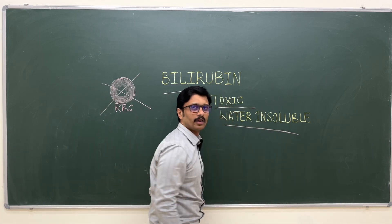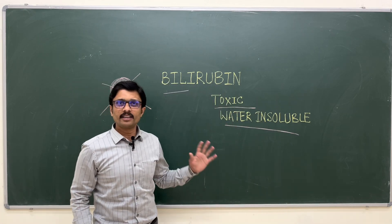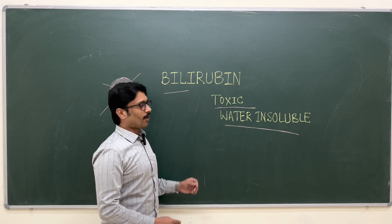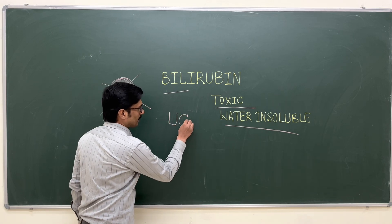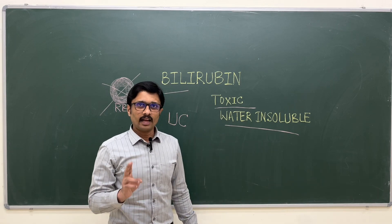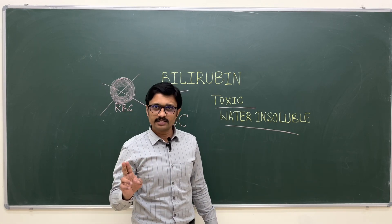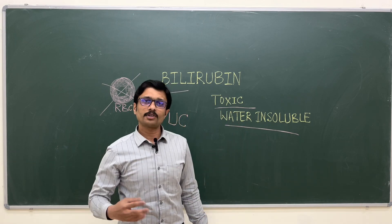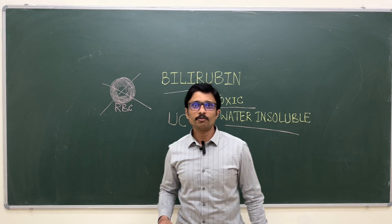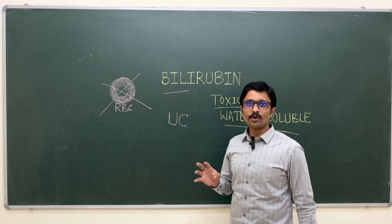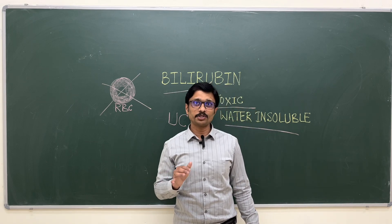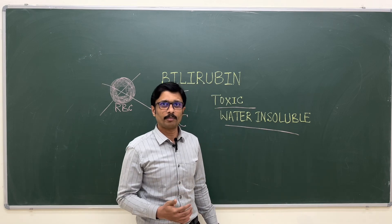This bilirubin formed by breakdown of RBCs is highly toxic and water-insoluble. We call it unconjugated bilirubin. This toxic unconjugated bilirubin has to be handled by liver cells to make it non-toxic and water-soluble before excretion. In the next part, we will continue with the role of the liver in detoxifying or conjugating this bilirubin and eliminating it from the body.